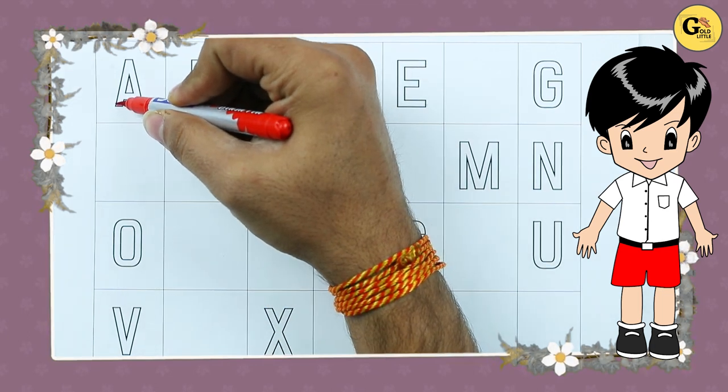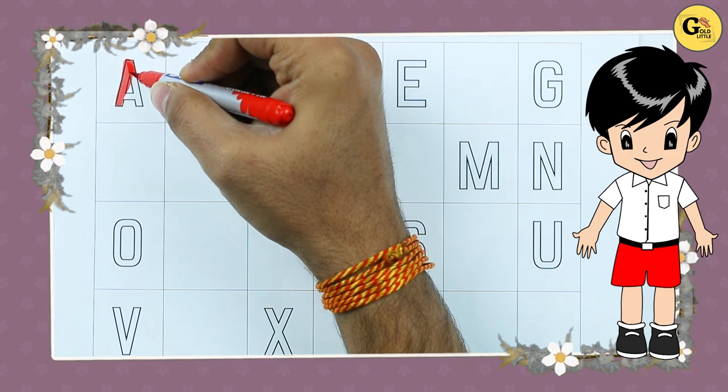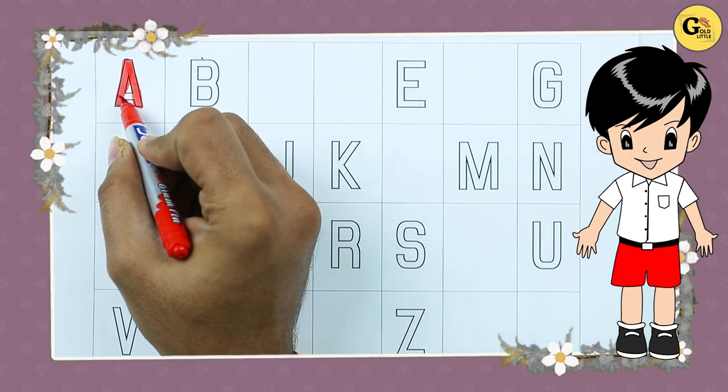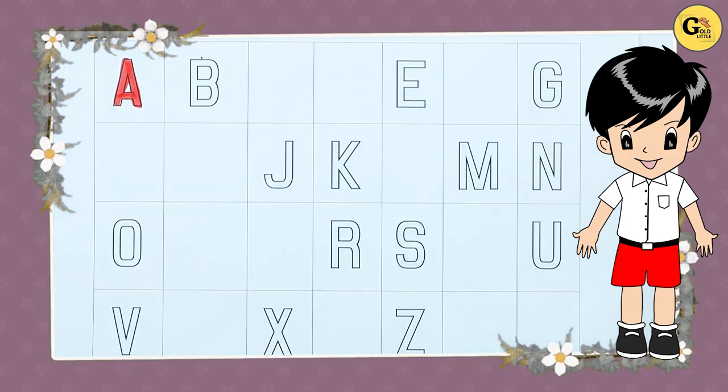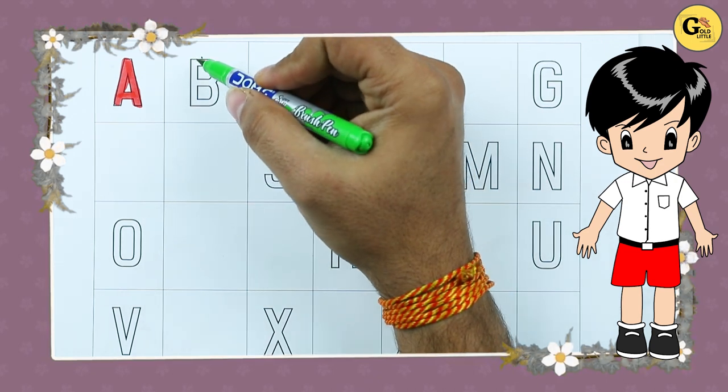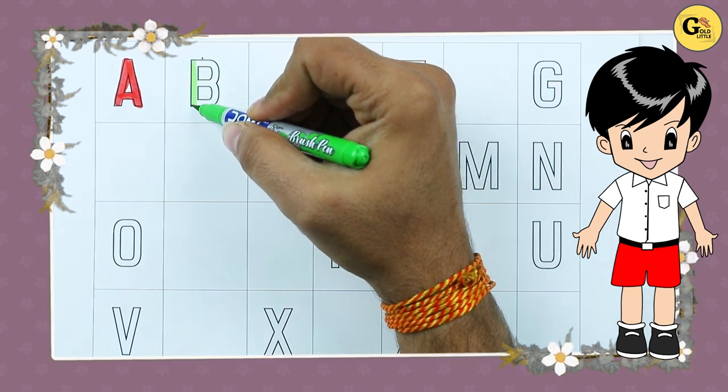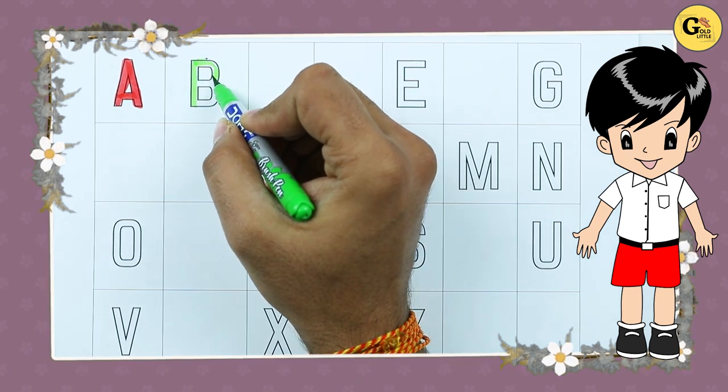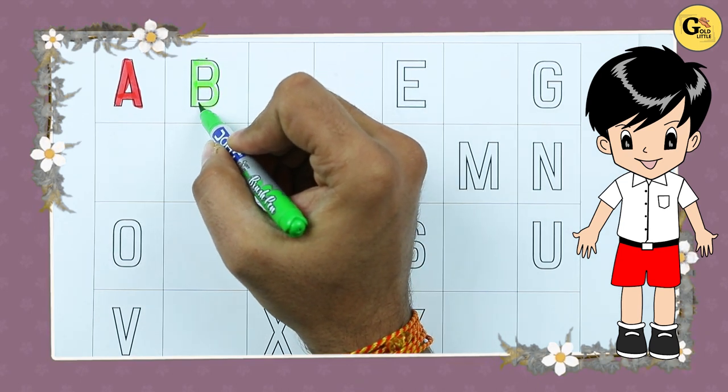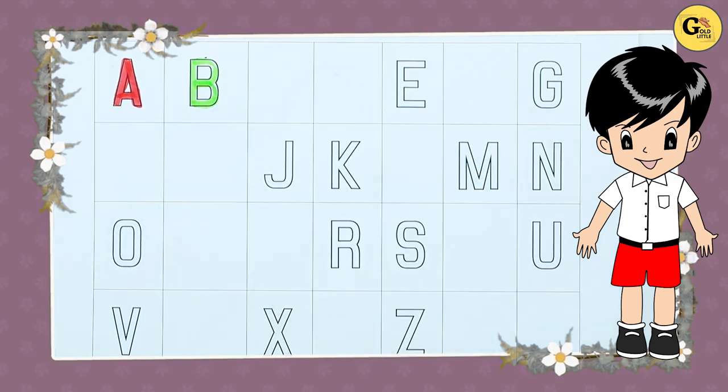A. A for apple with red color. A for apple. B. B for ball with green color.